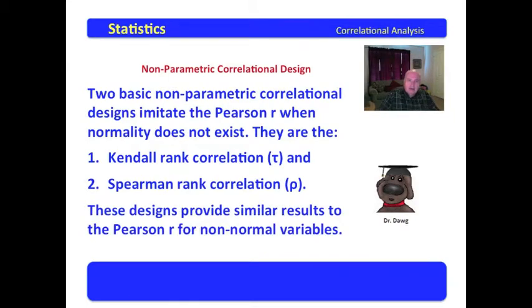These designs provide similar results to the Pearson R for non-normal variables. In other words, you'll get a value that will range between one on down to minus one. You will still have the positive and negative correlations. You will still have the strong, the medium, and perhaps the weak to no correlation perspectives on it.